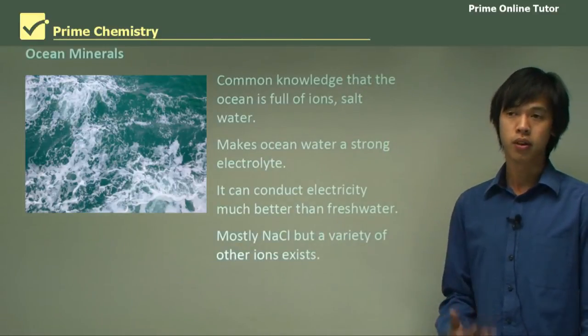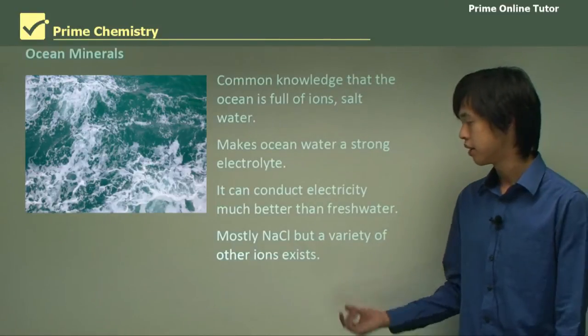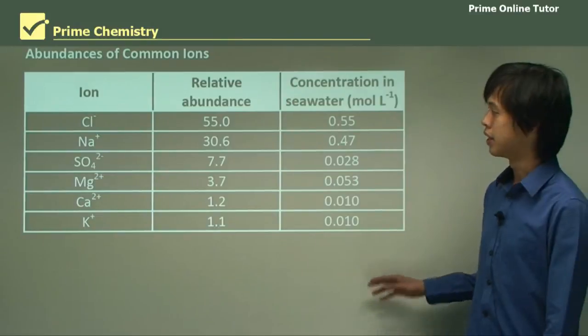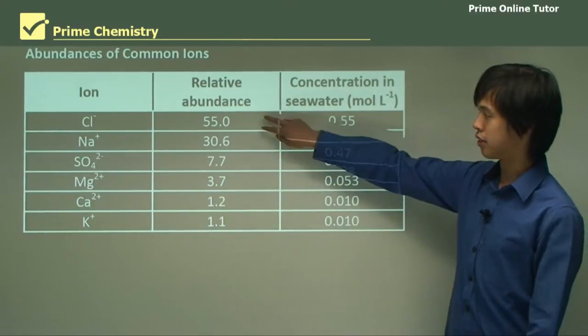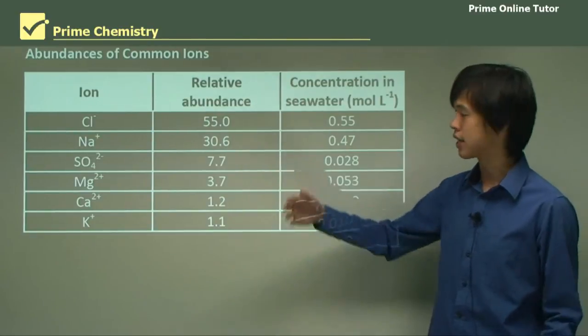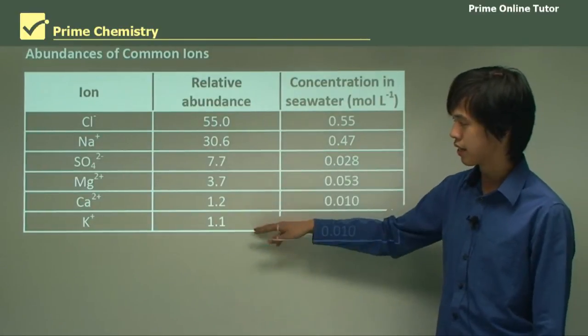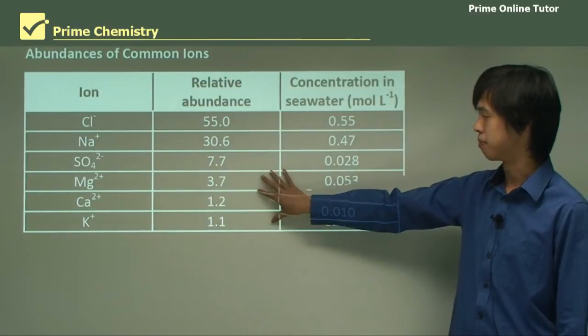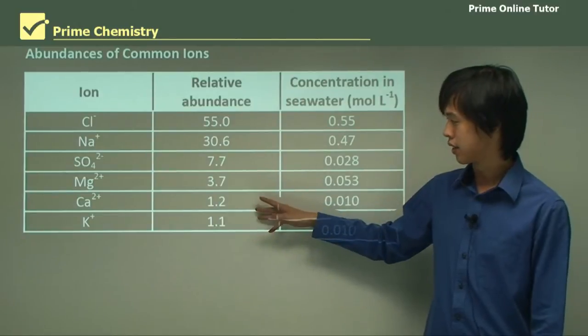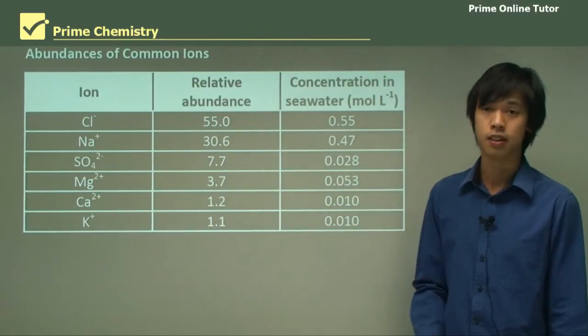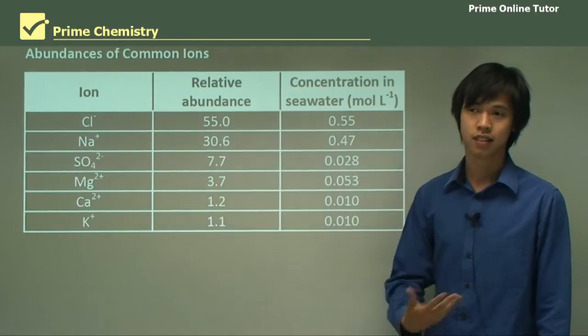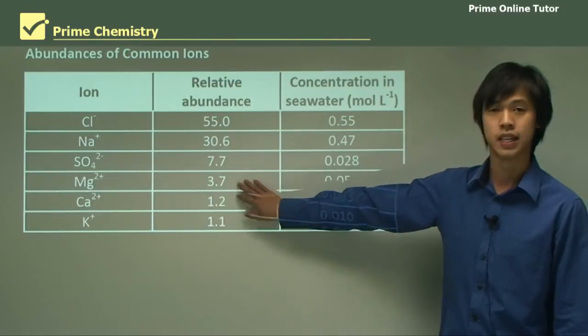In the ocean we see mostly sodium chloride, the salt that we eat, table salt. But there are other ions that exist in the ocean at much lower concentrations. If you look at this table, you can see that the relative abundance as a percentage, chloride is the highest, over half of the ions in the water are chloride ions. Sodium comes in at about 30.6%. And then you can see less than 10% for the remaining ones. These are still the most major components. Sulfate is almost 8%, magnesium is almost 4%, calcium is just over 1%, and potassium is also just over 1%.